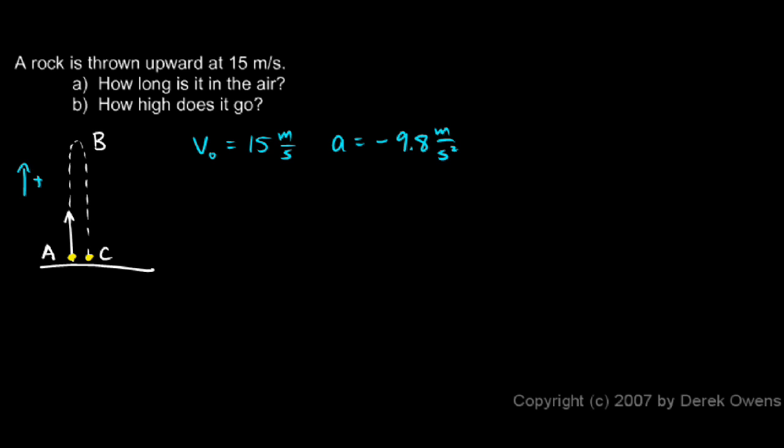So someone takes their arm and accelerates this thing upward and then releases it. We're not concerned with the arm accelerating the rock upward. We're just concerned with the free flight through the air from right after it's released to right before it hits. And for that motion the initial velocity is 15 meters per second. That's the velocity at point A. Right at the peak up here at point B it is stopped for just an instant. Its velocity is zero.